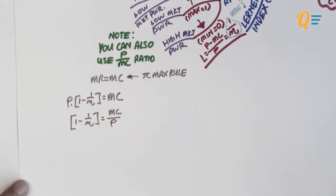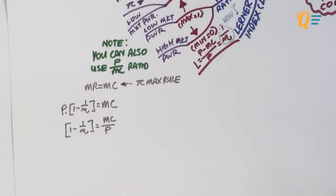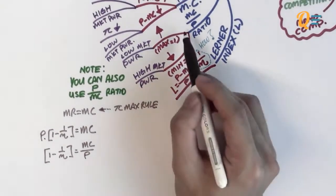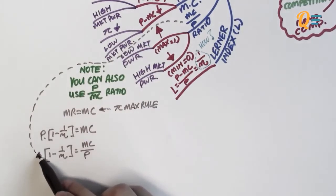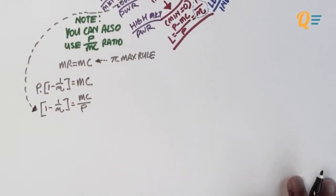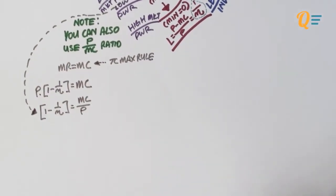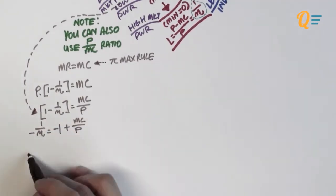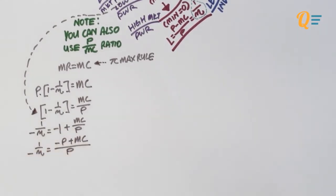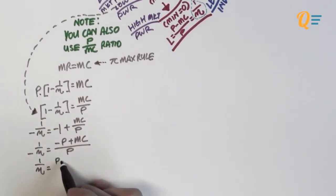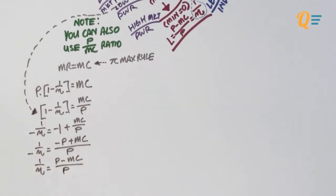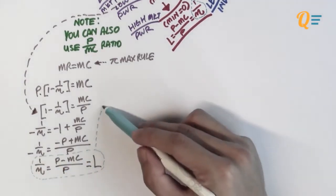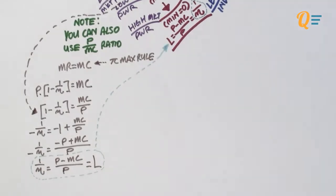Dividing both sides by P, we get the MC over P expression. Then bringing 1 over to the right-hand side, multiplying by P, and multiplying the whole equation by negative 1 gives us the Lerner's Index. As you can see, this is why the Lerner's Index is summarized as 1 over the price elasticity of demand. With a bit of practice, you should be able to reproduce this derivation yourself.